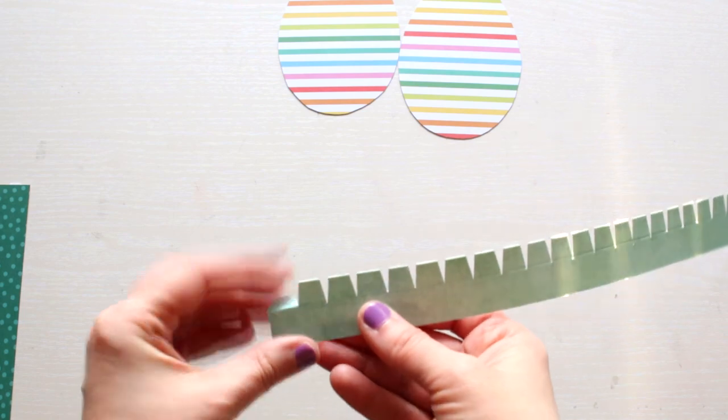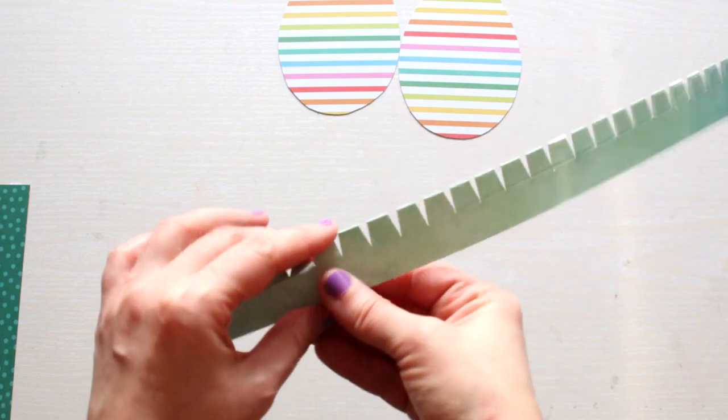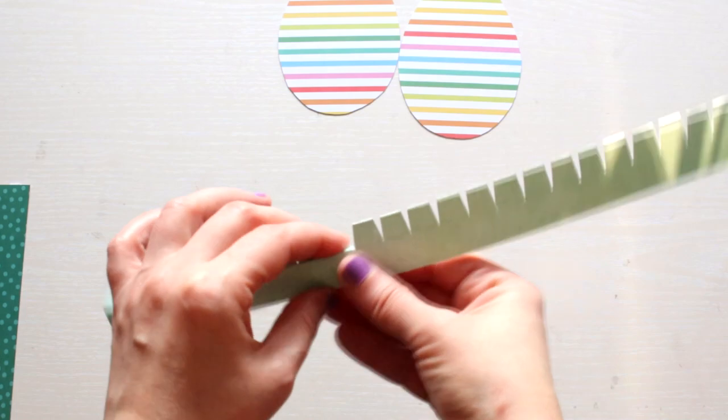Then use your fingers to fold all the small flaps. This is where the score line comes in very useful.